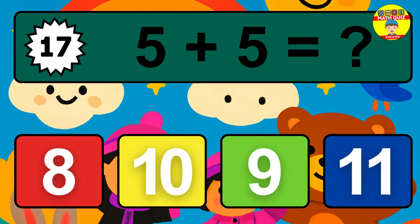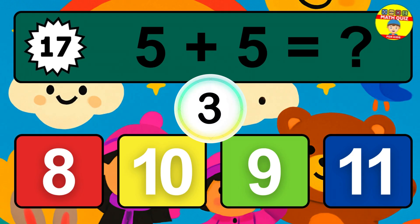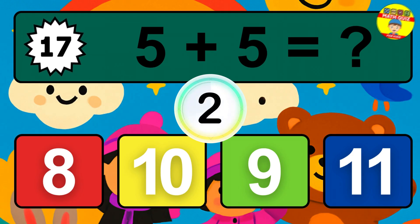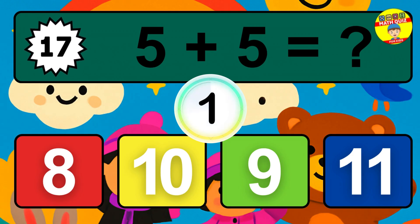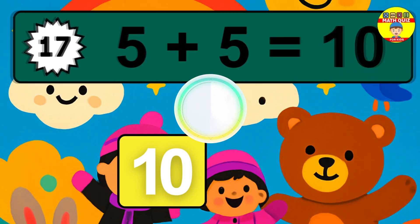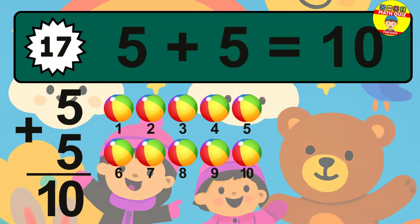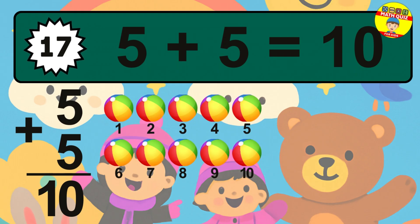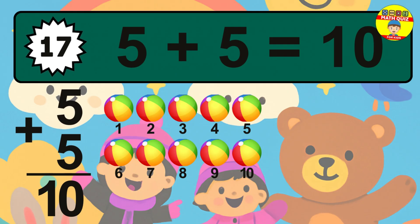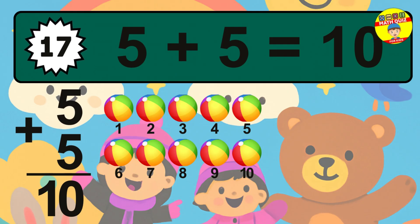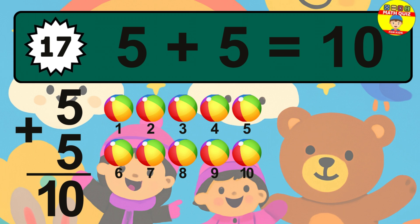Question 17. 5 plus 5 equals what? The answer is 5 plus 5 is 10. Let's count it: 1, 2, 3, 4, 5, 6, 7, 8, 9, 10.